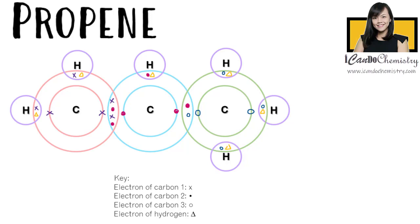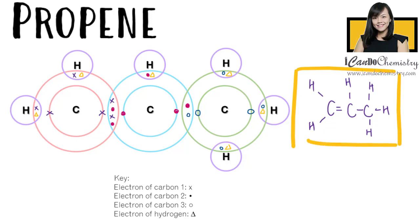This is the dot and cross diagram of propene. Let's replace each electron pair with a bond. There you go, we have achieved the structure of propene.